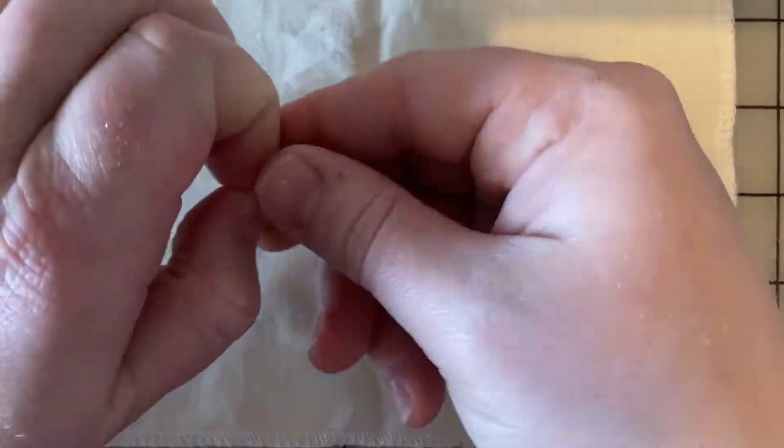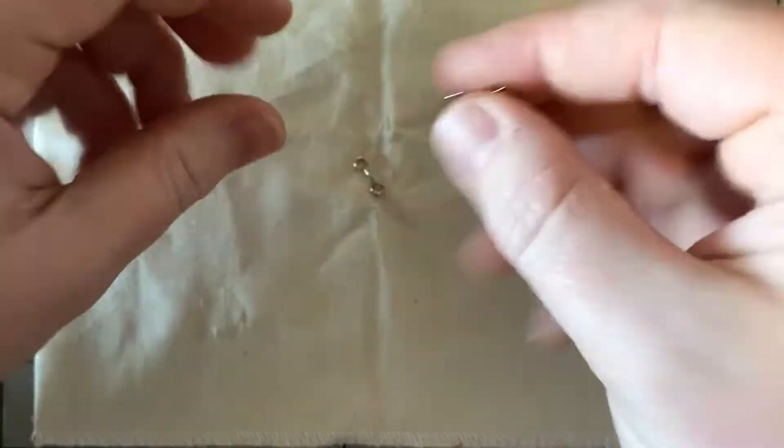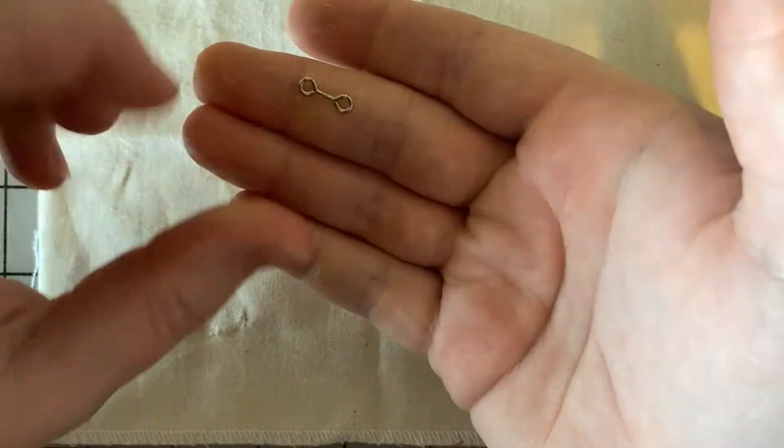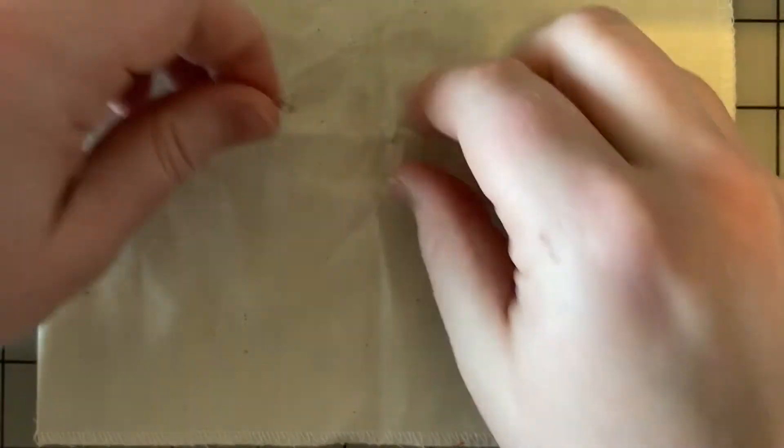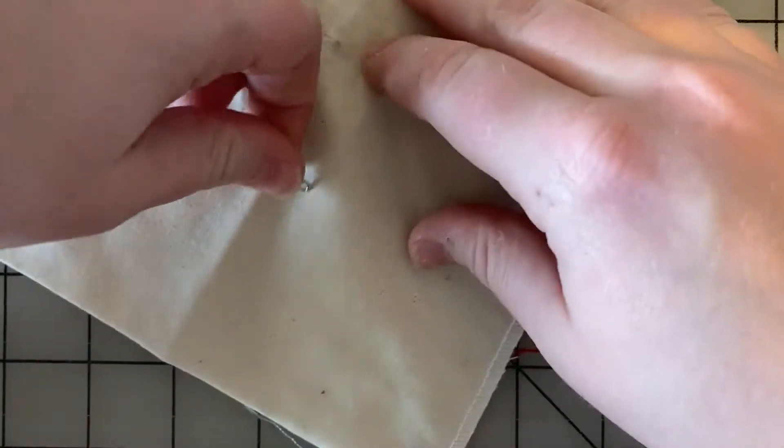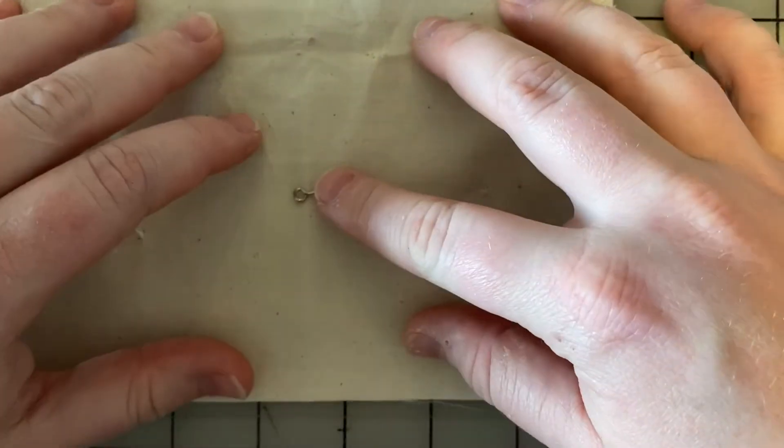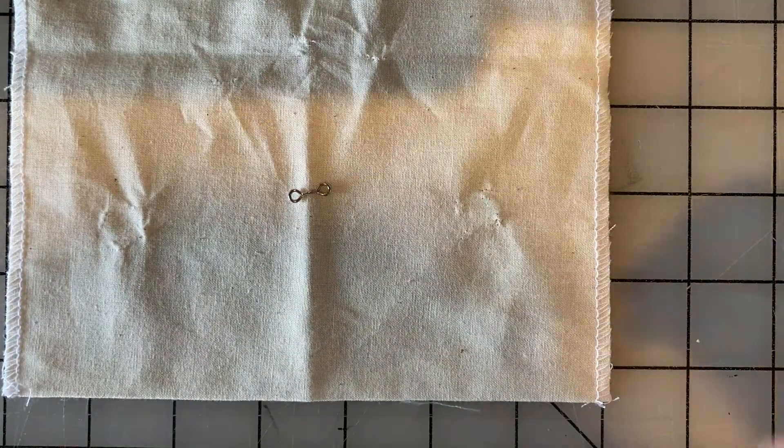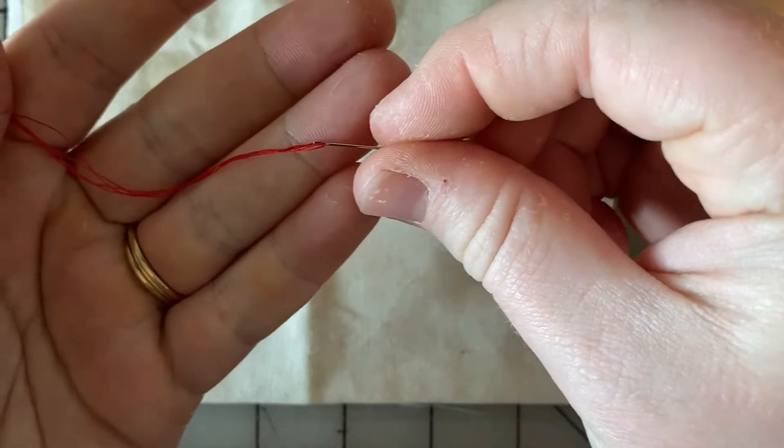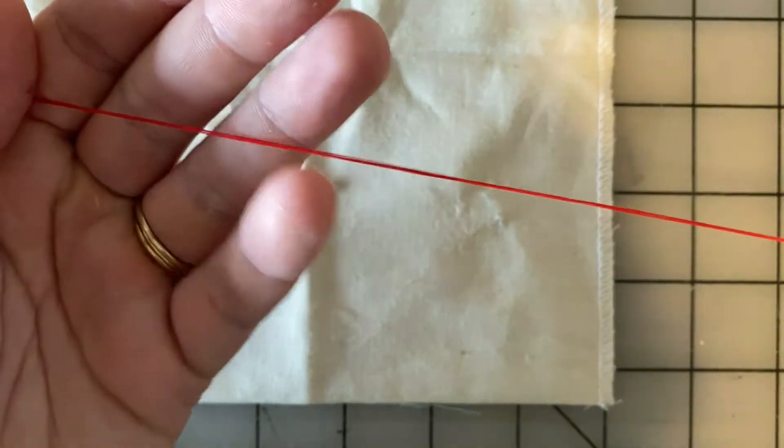In this video we're going to learn to sew on a hook and a bar, and almost always you will be sewing them on as a pair. So we're going to start with the bar, and I have a needle threaded with thread that's quadrupled and tied in a knot at the end.